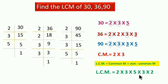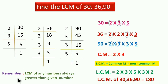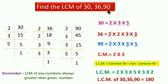LCM = 2×3×5×3×2 = 180। LCM of 30, 36, 90 is equal to 180। Remember: LCM of any numbers is always greater than the given numbers। LCM हमेशा जो numbers दिये होते हैं उनसे greater होता है - जैसे 30, 36, और 90 तीनों से 180 greater है।